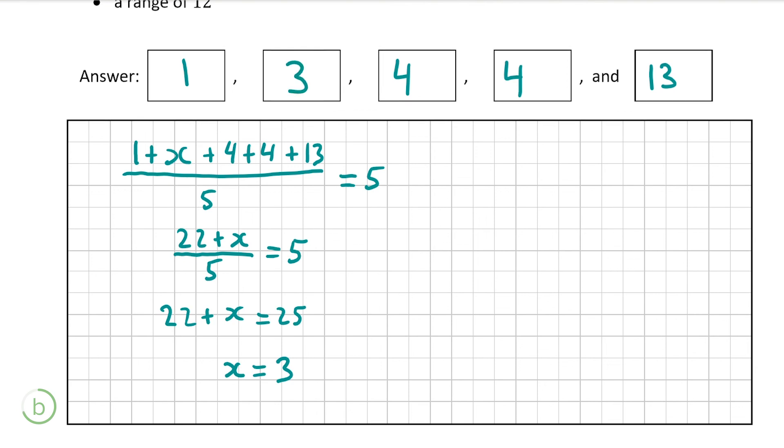So we have 1, 3, 4, 4 and 13. Now you may have a different 5 numbers to me and it may still be correct as long as the mode is 4, so that 4 will be there more than any other number. Your median is 4 so we have a 4 in the middle, and the mean is 5 which we know from the equation that we've written must be true if x is 3. And the largest number minus the smallest number is 12 which we know 13 minus 1 is 12. So as long as all that criteria is met then you will have the right answer and it isn't necessarily the same answer that I got here.